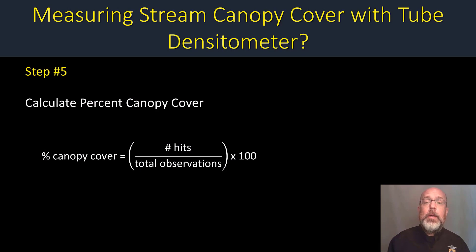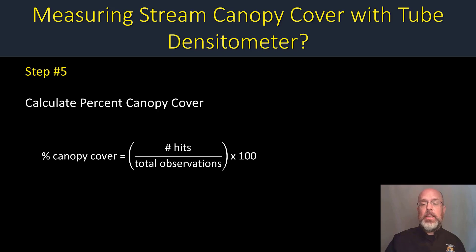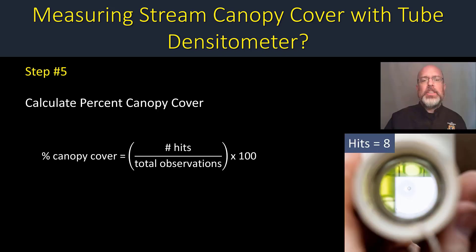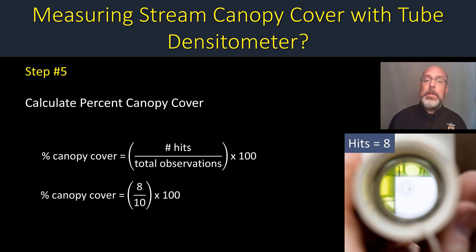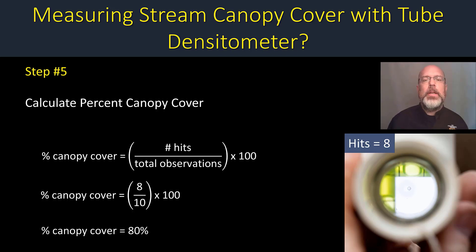Step number five: based on those 10 measurements along the transect, you're going to calculate percent canopy cover. Here's the formula: percent canopy cover is the number of hits divided by the total number of observations times 100. In our case, the total observations is 10. Let's imagine we had eight hits along our transect — so percent canopy cover would be 8 divided by 10 times 100, giving us 80 percent canopy cover for that transect.